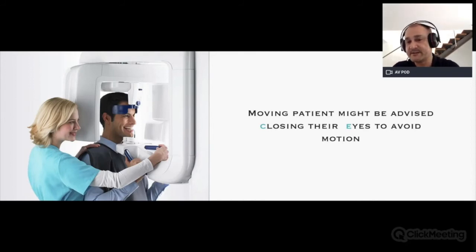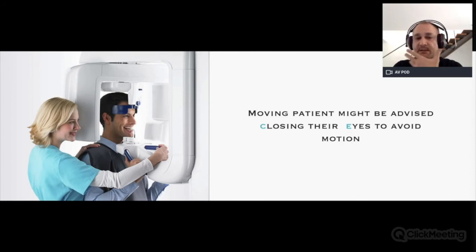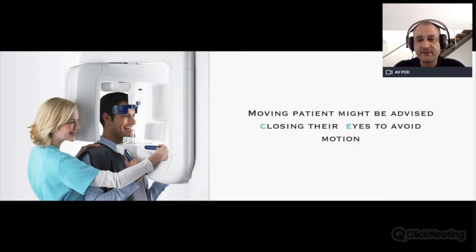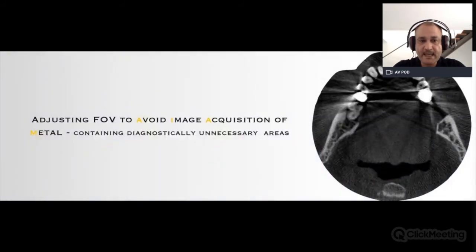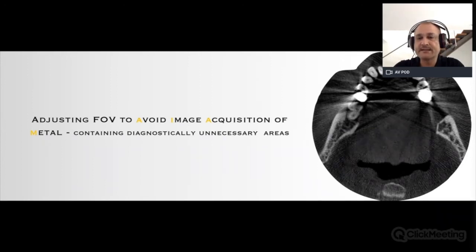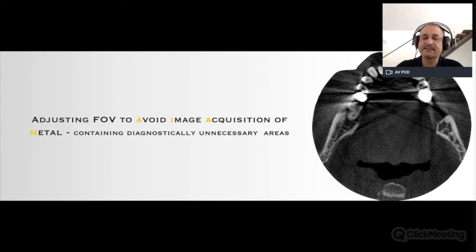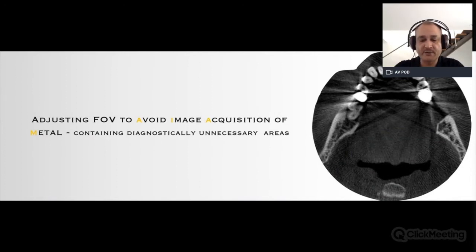For moving patients — nervous patients or elderly people — we may advise them to close their eyes after stabilizing their chin on the machine. Closing their eyes may minimize the probability of movement. Another trick: if we have an area of interest without metal but the rest of the mouth has metal, it is wise to choose only the area without metal to minimize scattering and beam hardening.